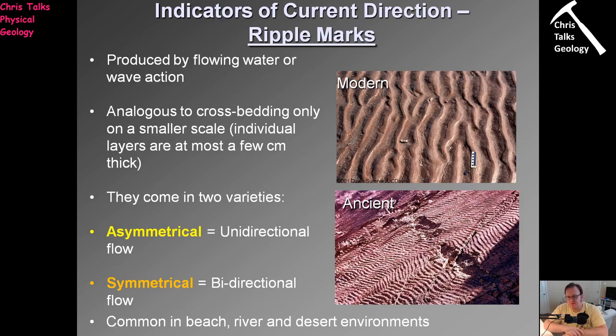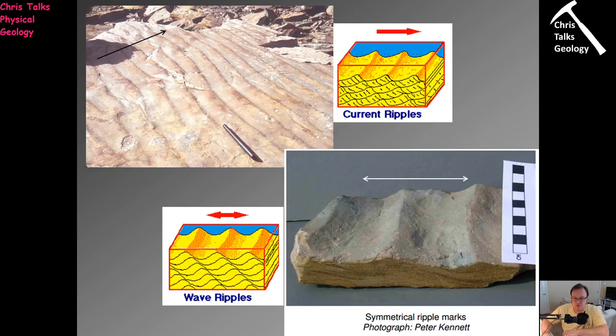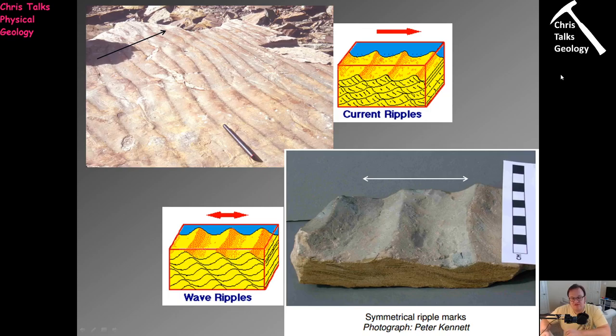Ripples are extremely common — you find them in beach, river, desert, and marine environments. They tell us quite a lot about which way the sediment is going and are also useful in identifying the environment of deposition. A symmetrical ripple instantly tells us we're probably in a beach environment. In contrast, asymmetrical ripples suggest a desert, river, or perhaps the back of a beach where sand is pushed by wind. The different types of ripple help us work out our environment of deposition.